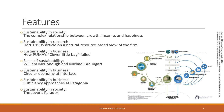Features of sustainability in society, research, and business are manifold. In this chapter we will start off with a feature on sustainability in society, looking at the very complex relationship between growth, income, and personal happiness — and how far they are related, and what this has to do with sustainability and sustainability management.